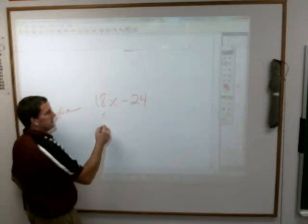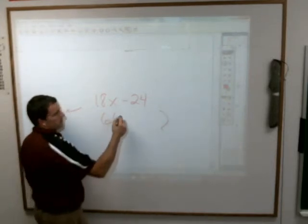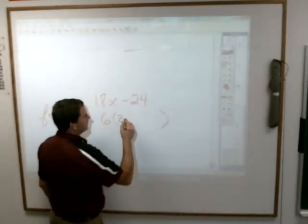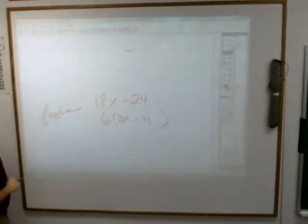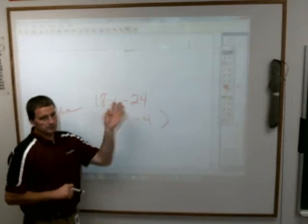6. And if I take a 6 out, what am I left with in my parenthesis? 3x minus 4. 3x what? 3x minus 4. Because 6 times 3x is 18x, 6 times negative 4 minus 4, 9 times 24.